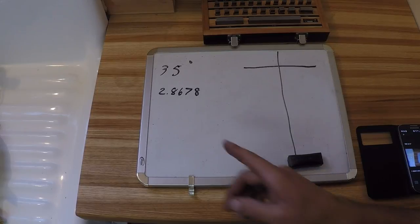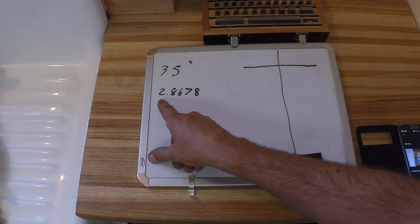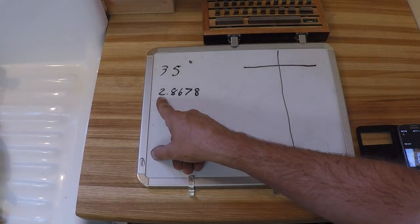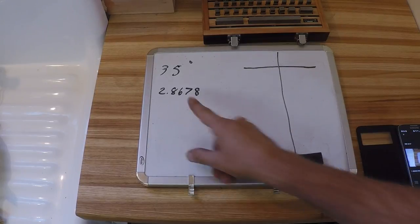Just to make it interesting, we're going to do 35 degrees. And that means that we're going to need a gauge stack of 2 inches, 867 thousandths, and 8 tenths.